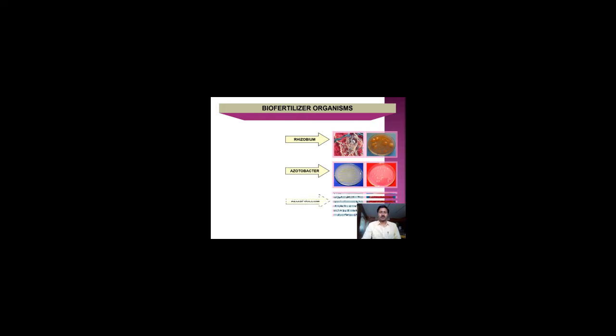Let's look at biofertilizer organisms. First is Rhizobium — organisms symbiotically associated with root nodules, as seen in groundnut, soybean, and other leguminous plants. The plant benefits from the microorganism while the microorganism gets nutrients from the plant, and nitrogen is fixed respectively. There are also free-living nitrogen-fixing bacteria like Acetobacter and Azospirillum, associated in the rhizosphere but not symbiotically, facilitating nitrogen in free form to plant roots.